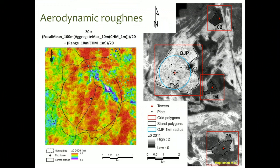We can also utilize the roughness information contained within the point cloud to come up with indices of aerodynamic roughness. One standard measure of roughness is Z0, or the zero plane of displacement. We developed a method — working with CSIRO in Australia — to filter the canopy height model to give us a two-dimensional map of roughness across the landscape. One traditional way to parameterize roughness or zero plane of displacement was simply to calculate it as an estimate of canopy height.